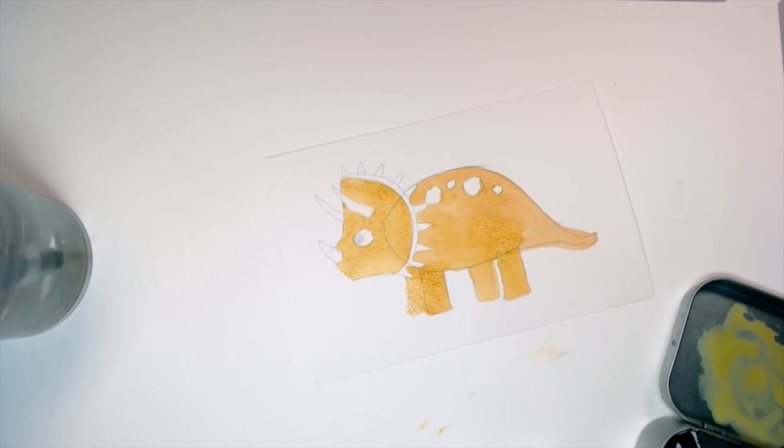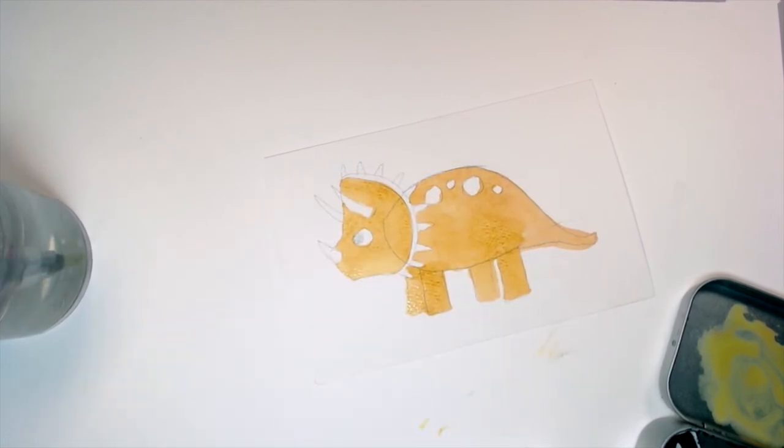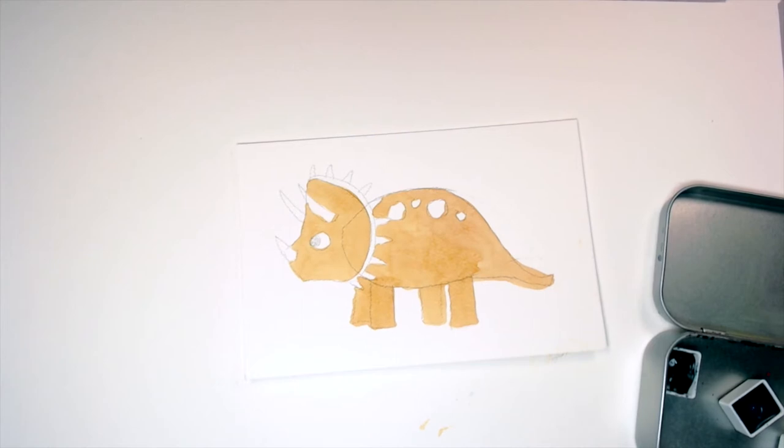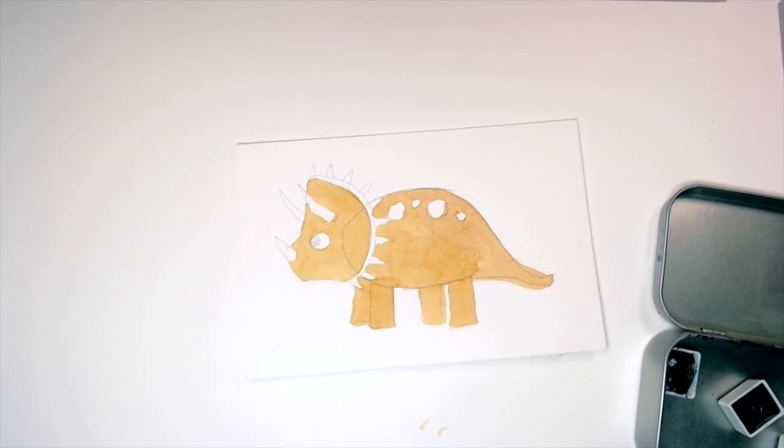I'm going to wait for that to dry, and then I'll come back in and paint the eye and the spots and the horns. My triceratops is dry and it's ready to be painted, and so I'm going to start with the spots and I'll paint them brown.